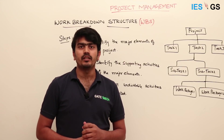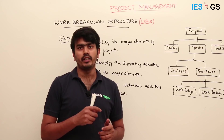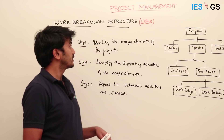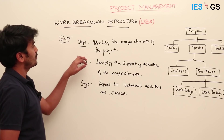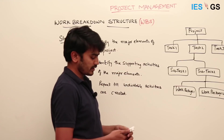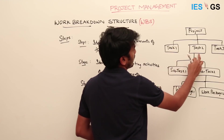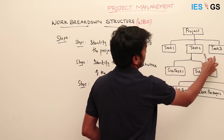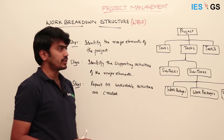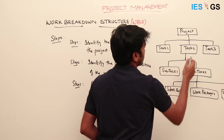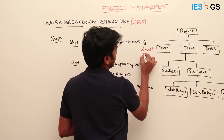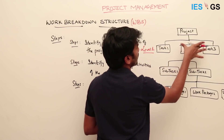The main steps involved in determining a work breakdown structure from a project scope are as follows. The first step is to identify all the major elements of the project. In this picture, you can see the project is divided into three tasks: Task 1, Task 2, and Task 3. These major elements define the project and we call this Level 1. These three tasks, when combined, form the final project.